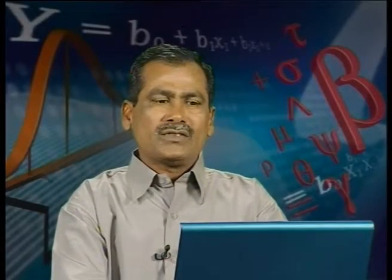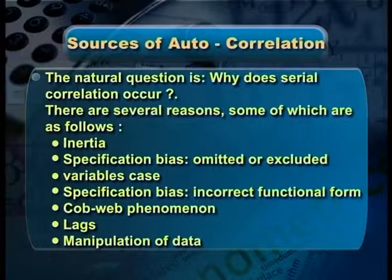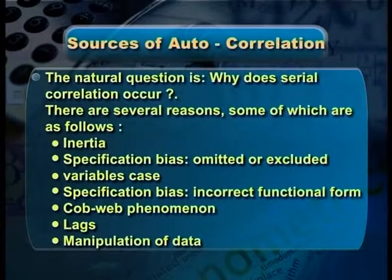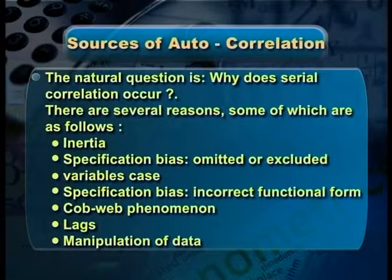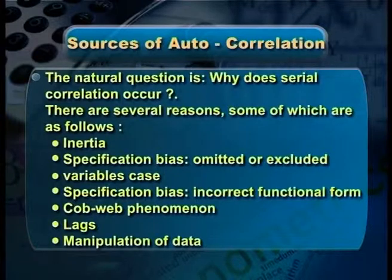In the second section we deal with the sources of autocorrelation. Why does serial correlation arise? There are several reasons. Among the important ones are: inertia, specification bias due to omitted variables, specification bias due to incorrect functional form, cobweb phenomena, lags, and manipulation of data. I would like to explain each cause in brief.